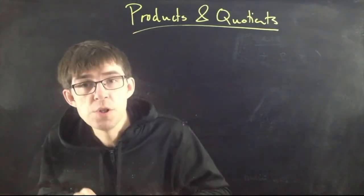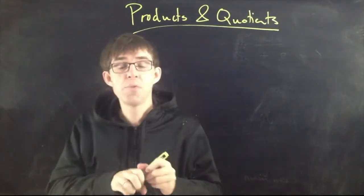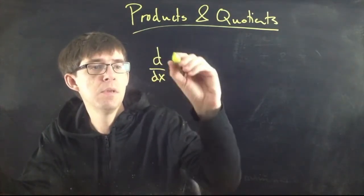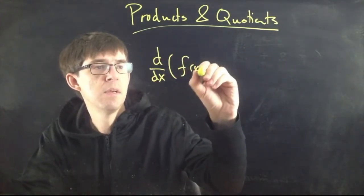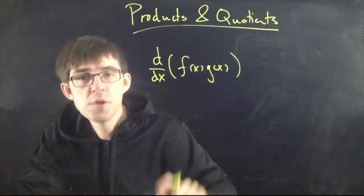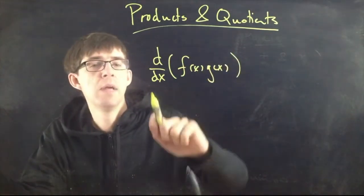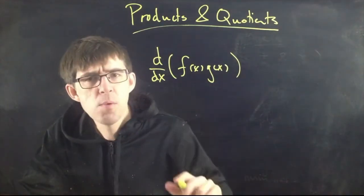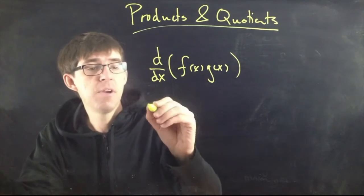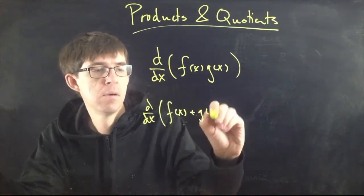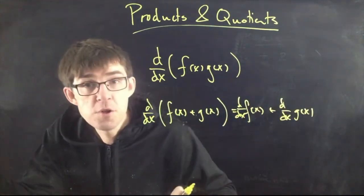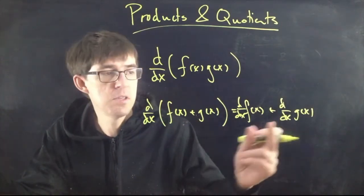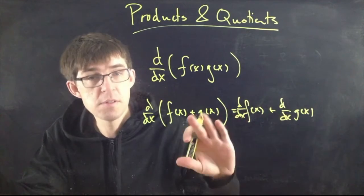Today we're talking about products and quotients — specifically the derivative of a product. If you have two functions multiplied together and want to take the derivative, that's the topic. We already talked about when functions are added together: the derivative of the sum is just the sum of the derivatives. That's very easy.